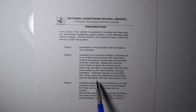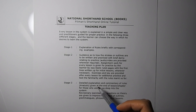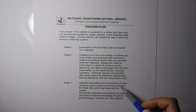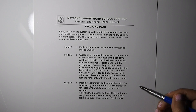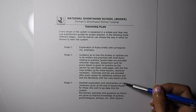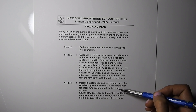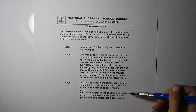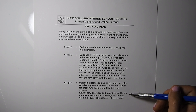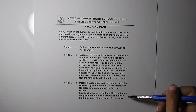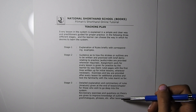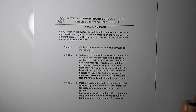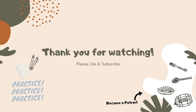Stage three: detailed explanations and commentary of rules analysis are given at the end of each lesson chapter for those who wish to go deep into the system. Revisionary exercises and questions on theory are given to improve knowledge of outlines, grammar, logs, phrases, etc., after lessons. Thank you for watching.